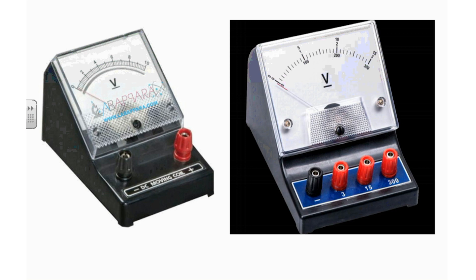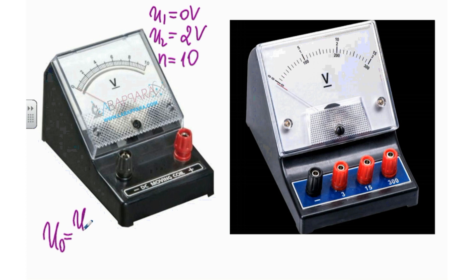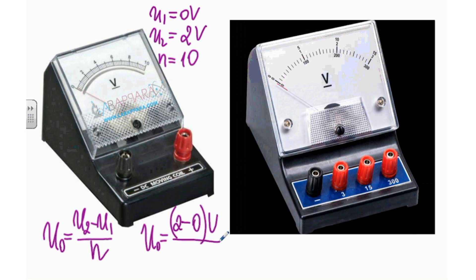Trebuie să determinăm valoarea unui diviziu. Pentru exemplu, pentru un voltmetru cu scară, vom alege două linii în dreptul cărora este scrisă valoarea numerică: U1 egal cu 0 volt, U2 egal cu 2 volt. Vom număra câte diviziuni se conțin între 0 și 2 — este vorba despre 10 diviziuni. Valoarea unui diviziu, U0, este egală cu U2 minus U1 împărțit la numărul de diviziuni. Deci 2 minus 0 volt împărțit la 10 diviziuni dă 0,2 volt pe diviziune. Când acul indicator al voltmetrului va indica o anumită poziție, vom putea citi indicațiile de pe scară.